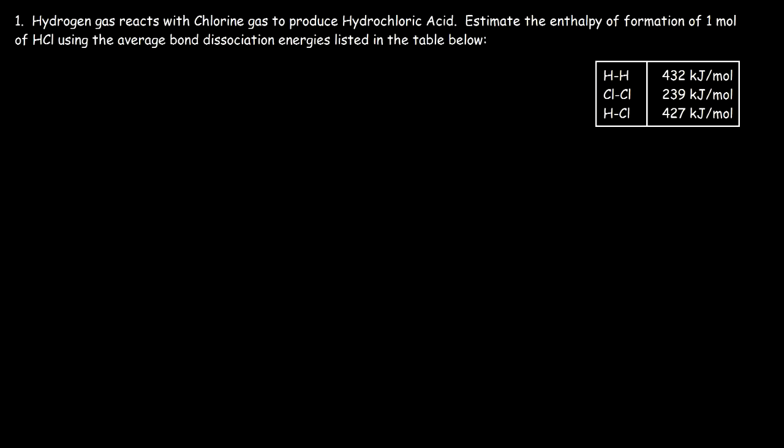In this video we're going to talk about how to estimate the enthalpy of a reaction using average bond dissociation energies. We'll work on this question: hydrogen gas reacts with chlorine gas to produce hydrochloric acid. Estimate the enthalpy of formation of one mole of HCl using the average bond dissociation energies listed in the table below.